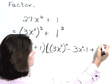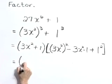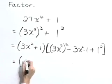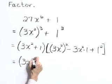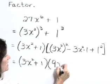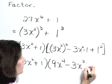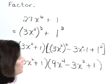one squared. Now let's clean this up a little bit and write our completely factored form as 3x squared plus one times 9x to the fourth minus 3x squared plus one.